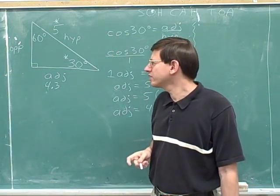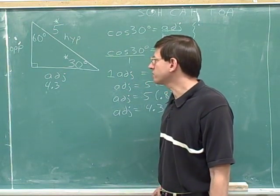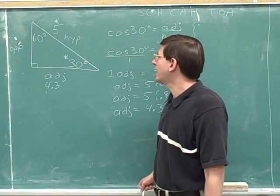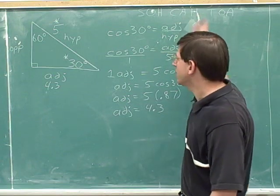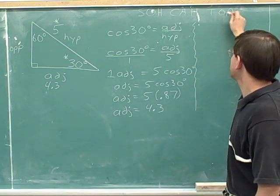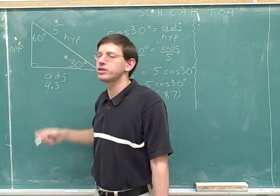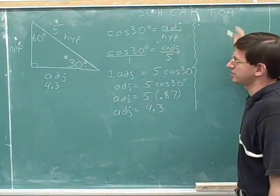However, that's not what is usually done in this situation, so we're not going to use the Pythagorean theorem. Something else that we could do is now we could use the tangent. Remember that originally the tangent was useless because the tangent was referring to the opposite and the adjacent sides, and we didn't know either of those.